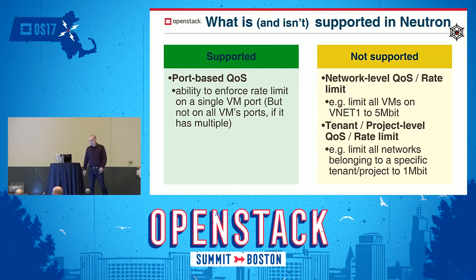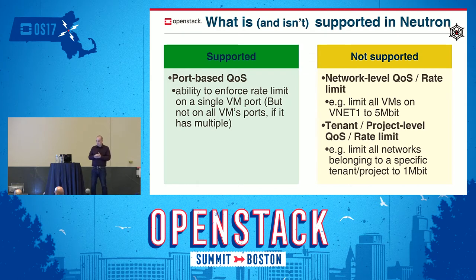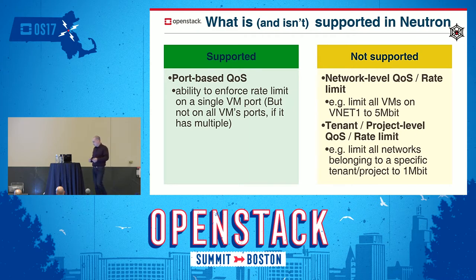What is and what isn't supported in Neutron? What we have today in Neutron is port-based quality of service. That basically means we can do rate limitation for a single VM port, but not all of the VM port if it has multiple ports. What is not supported is network-level quality of service. If you want to do a rate limitation on the virtual network — for example, all the virtual machines that belong to a specific virtual network, say VNET 1, limit them to 5 megabit total — that's not possible. Also, tenant- or project-level quality of service or rate limitation is not possible. If you want to limit all the networks that belong to a specific project together to be, say, 1 megabit, that's also not an option today.